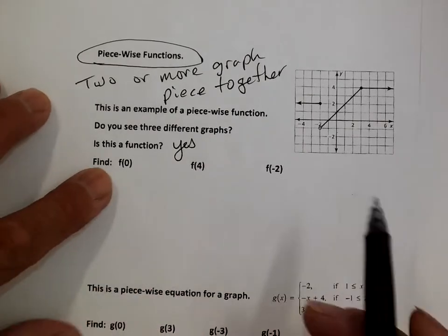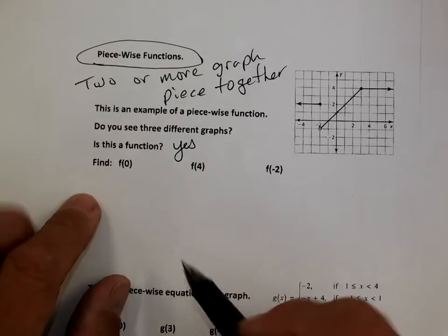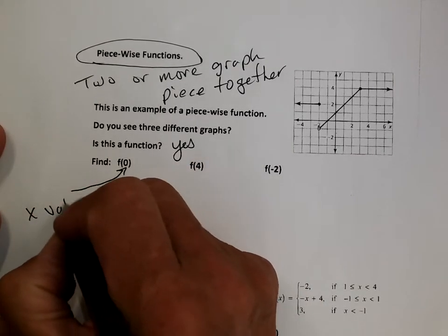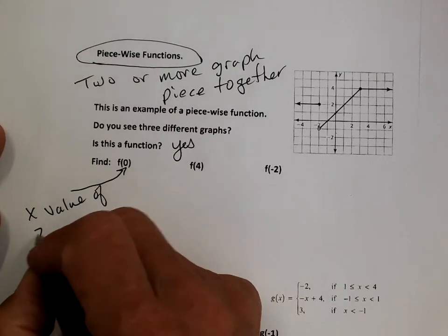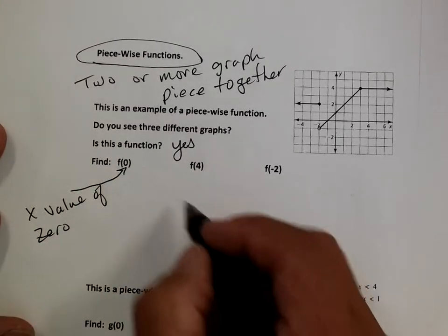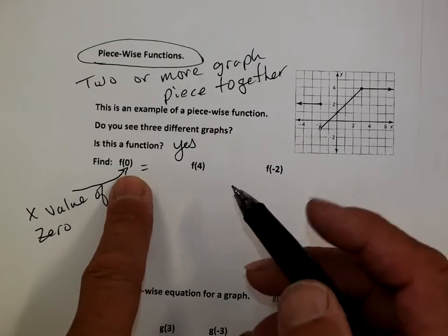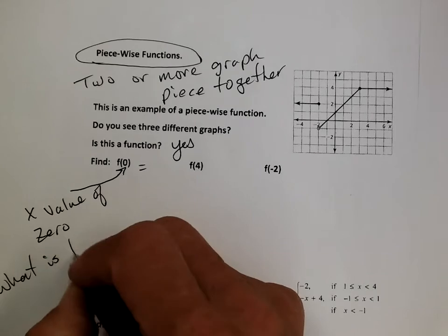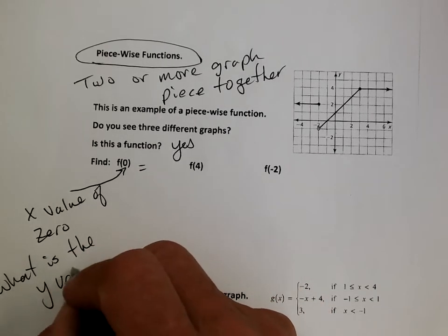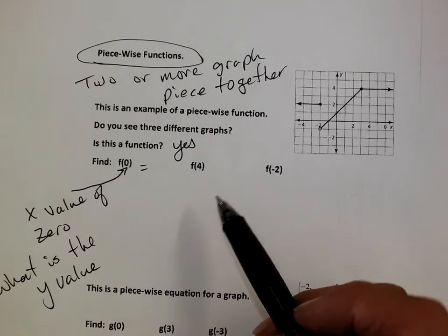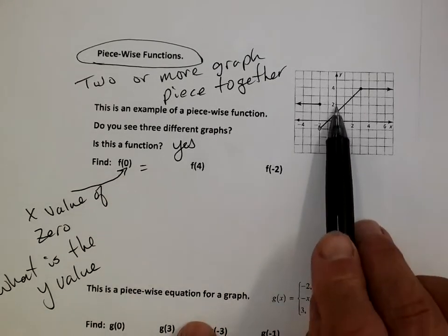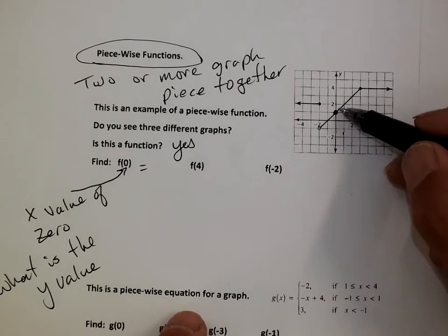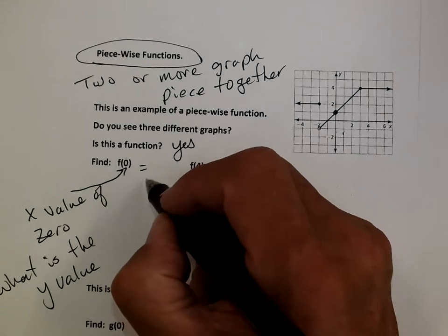Now, what does this mean? Find f of zero. All right. Well, f of zero. That's like the x value. That's an x value of zero. So the answer to this question, we're looking for its height or y value. So what is the y value? All right. Let's see. I can do this. So if I go to zero. It's right here. So right here my graph touches. Right there. The y value is one. So f of zero is one.